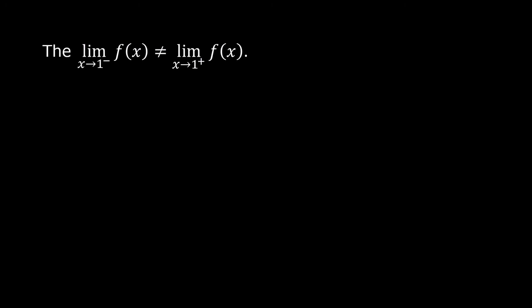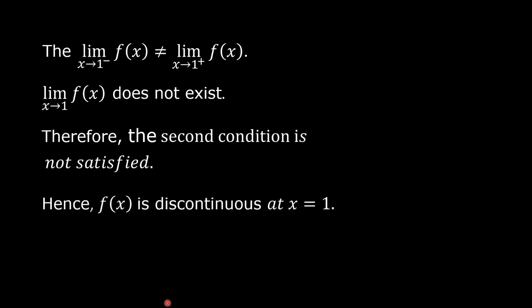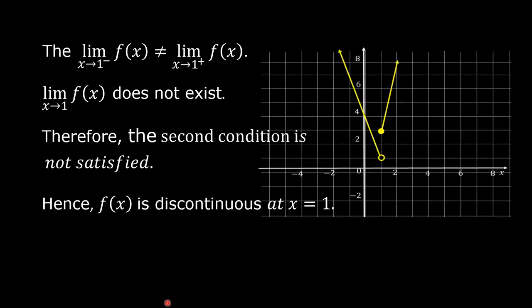We found that the limit of f of x as x approaches 1 from the left is not equal to the limit from the right, and therefore the limit of f of x as x approaches 1 does not exist. The second condition is not satisfied. Hence, the function is discontinuous at x equals 1. This is the graph of the function, and we can see that there is a gap in the graph.